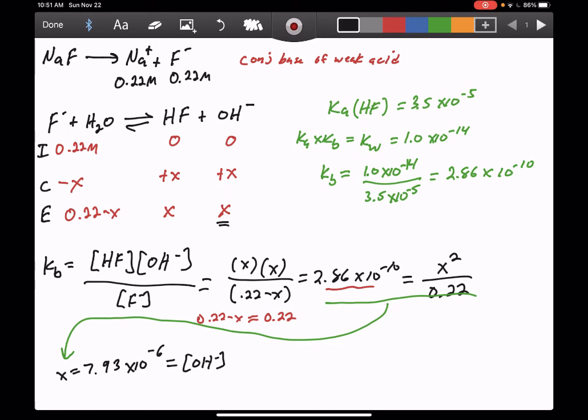From that we can find pOH. Our pOH is going to be equal to negative log of the concentration of OH minus, so that's the negative log of 7.93 times 10 to the minus 6, and we get a value of 5.10. Then for the pH, that's going to be equal to 14 minus pOH, and that becomes equal to 8.90.